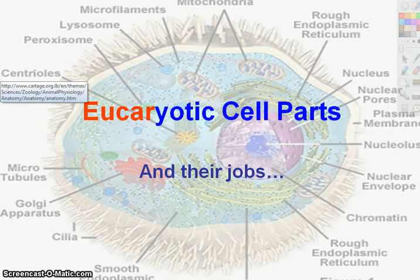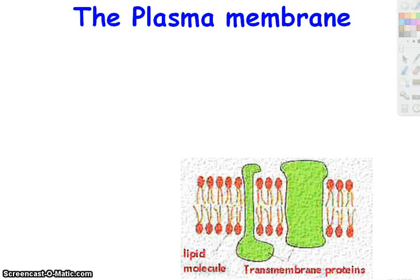First, the outermost portion of a eukaryotic cell would be the plasma membrane. It's also called the cell membrane. Plasma membrane, cell membrane — same thing. Some books even call it the plasmalemma, one word. It's all just different words for the same thing.